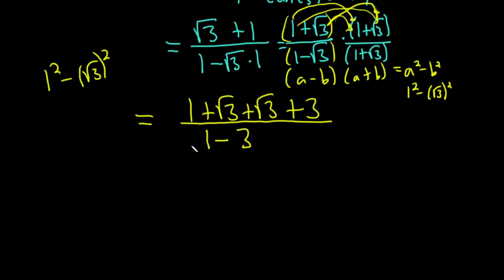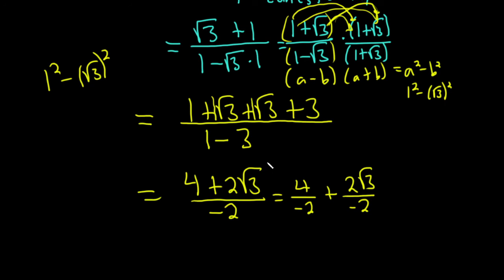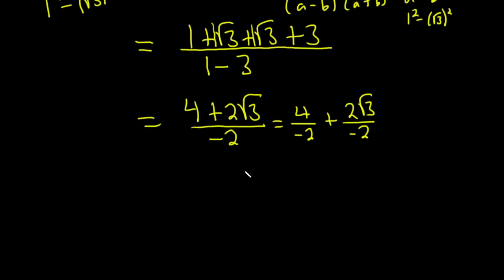Let's keep going. So this is equal to, 1 plus 3 is 4, and then square root of 3 plus square root of 3 is 2 square root of 3, and then 1 minus 3 is negative 2. We can now break this up into two fractions, so it's 4 over negative 2, and then plus 2 square root of 3 over negative 2. It's a simple looking problem but there's a lot of arithmetic, there's stuff with roots. So this is equal to 4 over negative 2 is negative 2, and these cancel here so you get minus the square root of 3. So quite a bit of work.